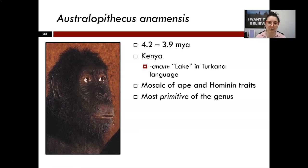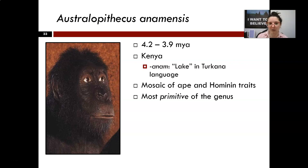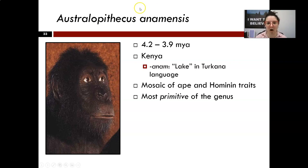The slides provide background information on the key distinctions between them, and we'll look at some fossil skull casts in our lecture. Our earliest Australopithecus is one of the gracile forms — anamensis. One distinction to note is between those from eastern Africa and those from southern Africa, though we go more into that in Biological Anthropology 2. Australopithecus anamensis dates to 4.2 million years ago, overlapping with Ardipithecus in East Africa, with a mosaic of ape-like and hominin-like traits.